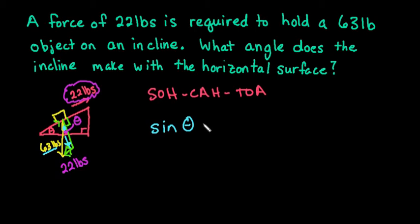So I have sine of theta equals my opposite, which is 22, over my adjacent—sorry, not my adjacent—my opposite over hypotenuse, which is 63.